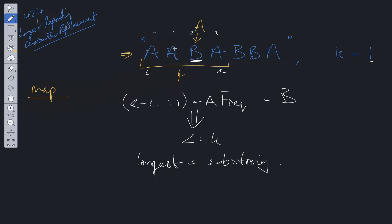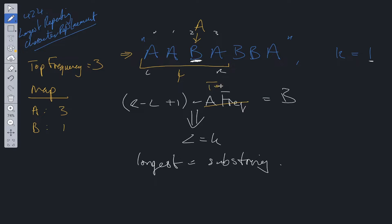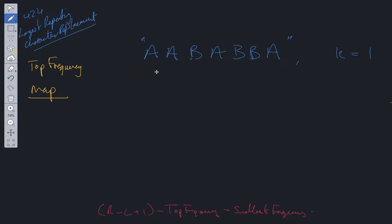The map is going to store how many times we see each character. Up to this point, a is pointing to three and b is pointing to one. We also need a top-frequency variable, which is just the character we've seen the most. At this point it's three because a maps to three and b maps to one. We can adjust the equation so that rather than a-frequency, we use top-frequency, which represents the smallest frequency of characters to replace.